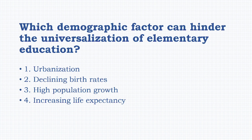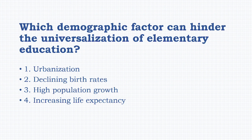Which demographic factor can hinder the universalization of elementary education? Options: urbanization, declining birth rates, high population growth, increasing life expectancy. The answer is: high population growth.